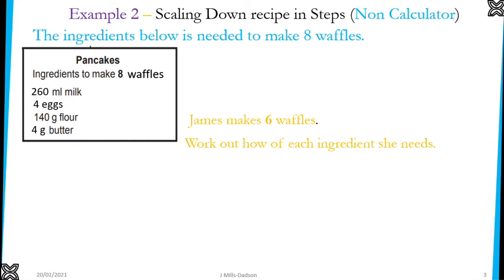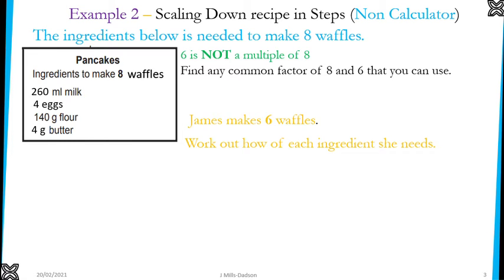Example 2. We have ingredients for 8 waffles and we need to make 6 waffles. This is going to be scaling down because in our final recipe, it's going to be smaller than what we had before. With a calculator it's easy, but this is non-calculator.